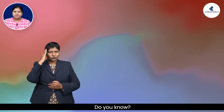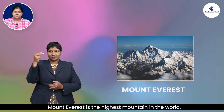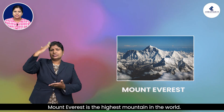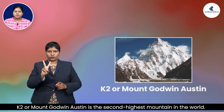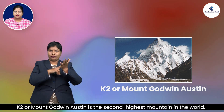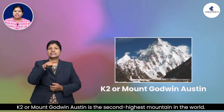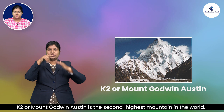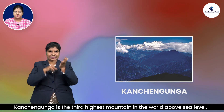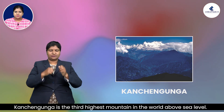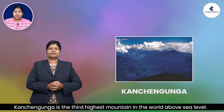Do you know? Mount Everest is the highest mountain in the world. K2, or Mount Godwin-Austen, is the second highest mountain in the world. Kanchenjunga is the third highest mountain in the world above sea level.